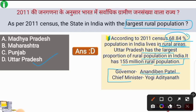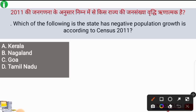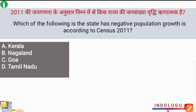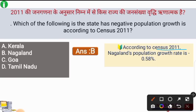Next question: which of the following states has negative population growth according to the census of 2011? The correct answer is option B — Nagaland. According to the census of 2011, Nagaland was the state that showed negative population growth of minus 0.58%.